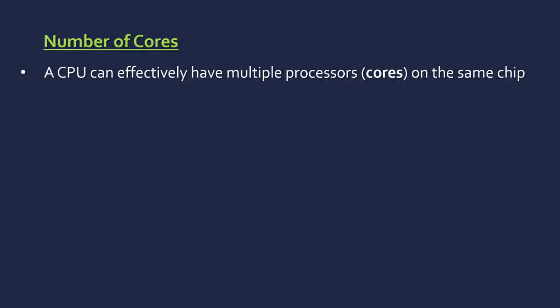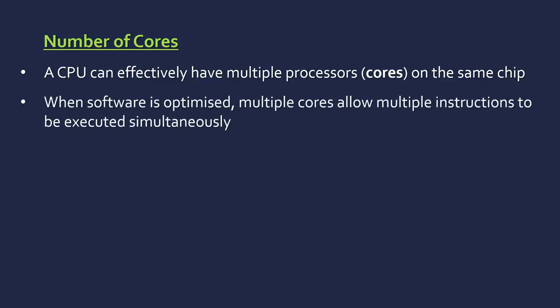The final factor is the number of cores a CPU has. You can have multiple processing units — which is what a core is — within the same chip. Each processing unit might have its own ALU, control unit, and registers, so effectively it's like having multiple CPUs within a larger CPU. Instead of executing only one instruction at a time, when the software is optimised — and this is a big caveat — multiple cores allow you to execute multiple instructions simultaneously, in parallel. But it's not quite as simple as this; it's not going to be 100% efficient, so if you have two cores it doesn't mean you can execute exactly twice as many instructions.